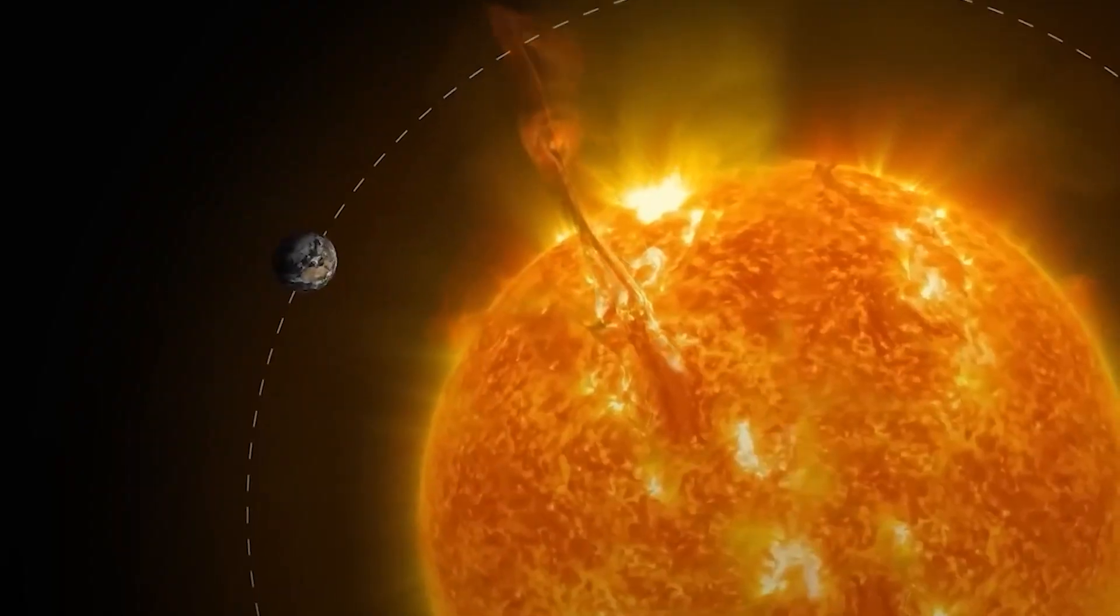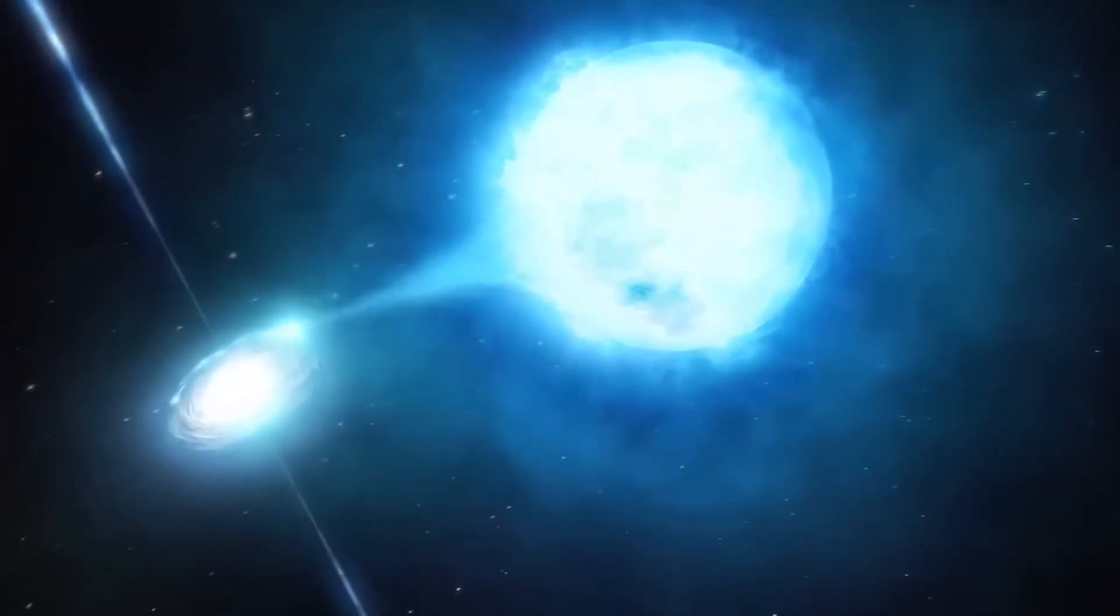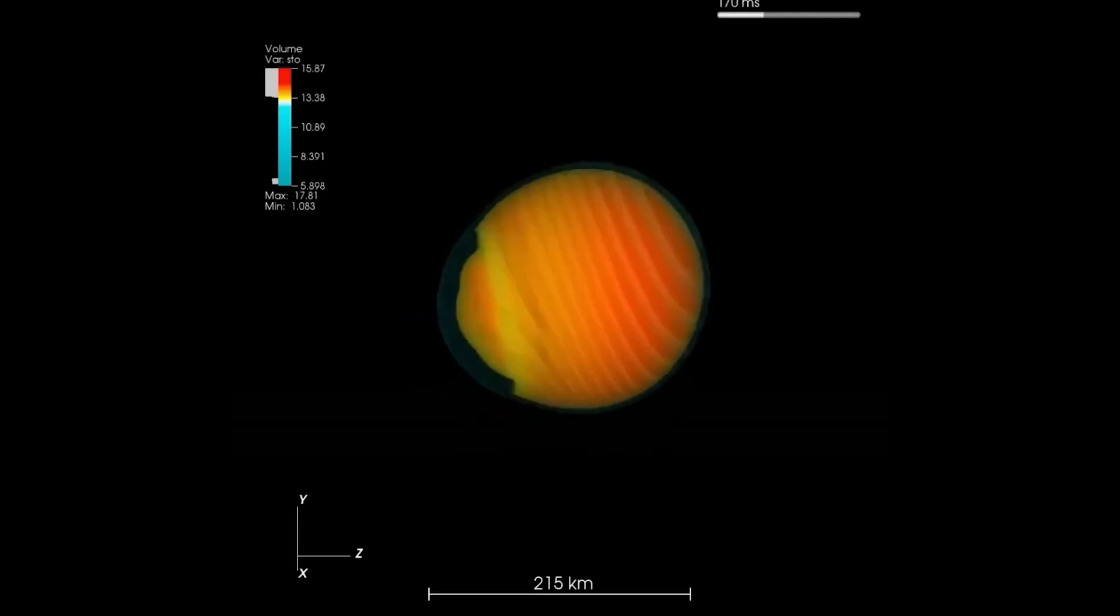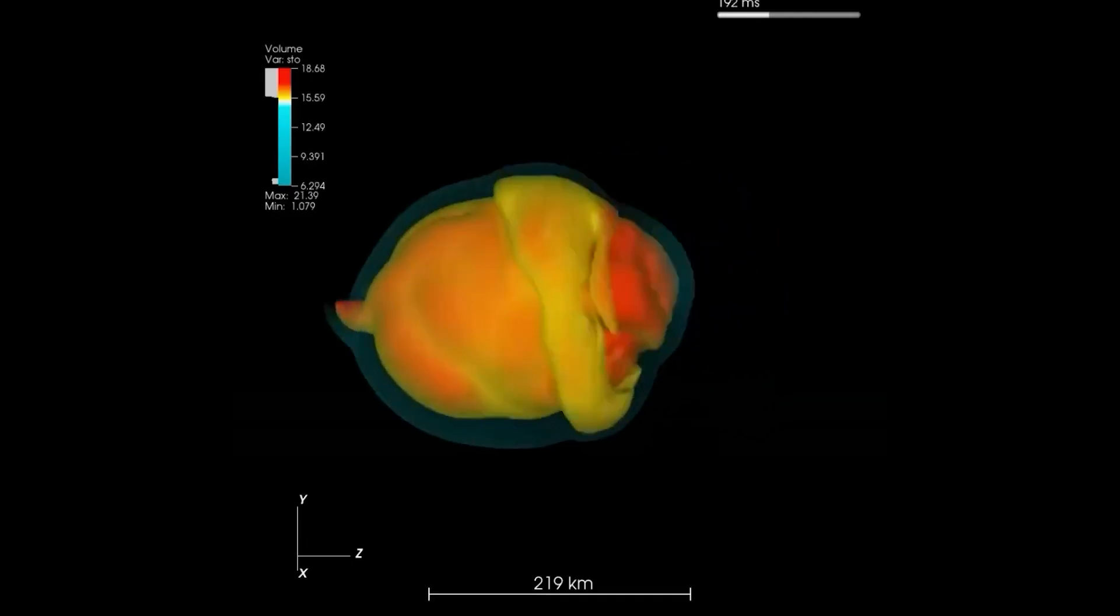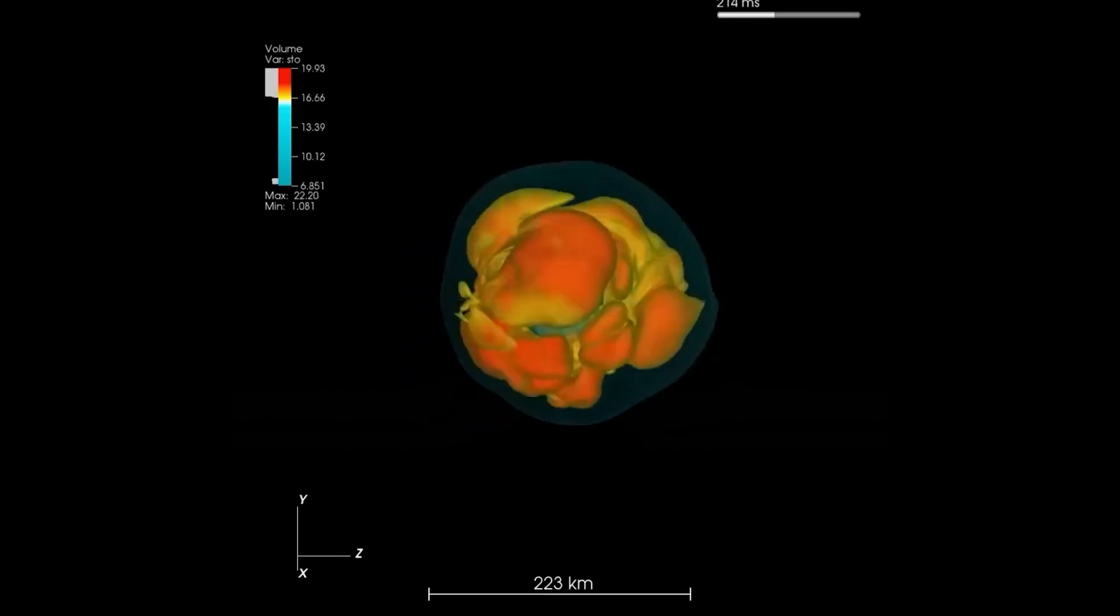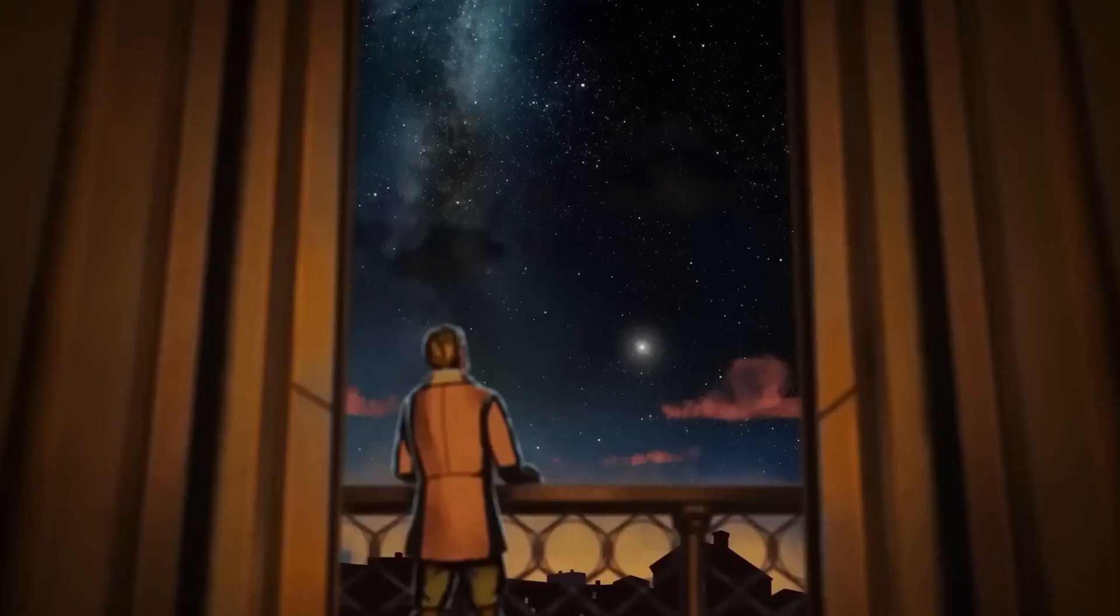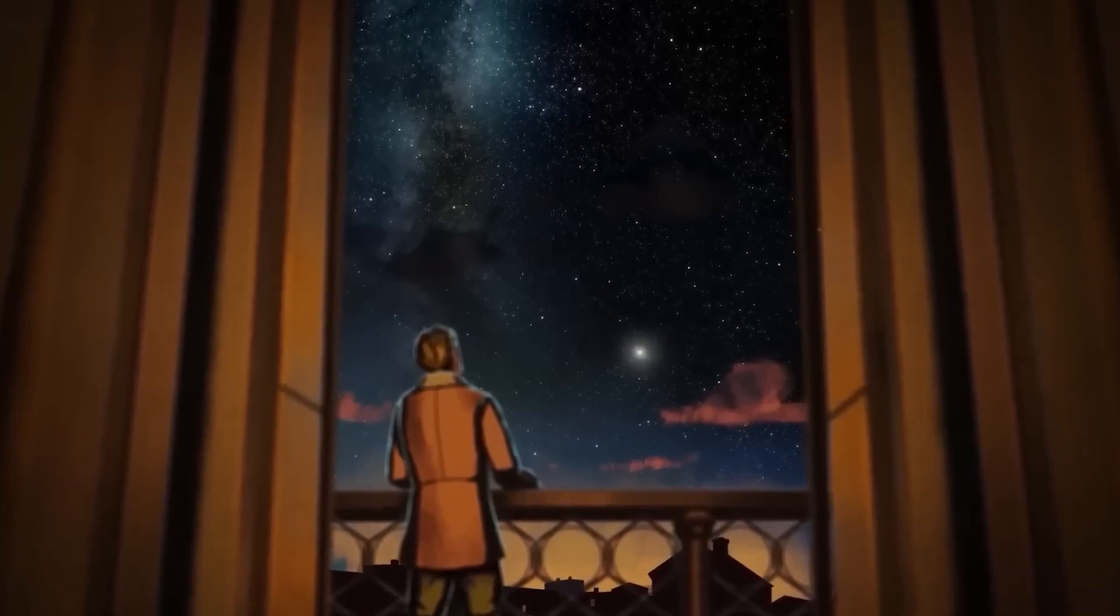This is because the vastness of space acts as a protective buffer against the harmful effects of a supernova. As the energy from the explosion disperses and dilutes across the interstellar medium, its impact diminishes significantly. By the time any remnants of Betelgeuse's explosive spectacle reach our humble blue planet, they would be nothing more than a faint cosmic whisper.